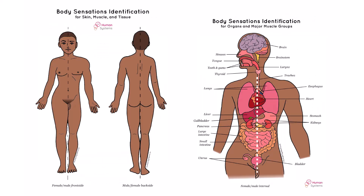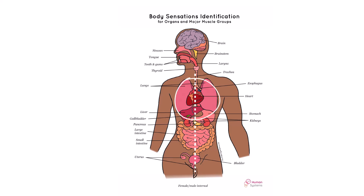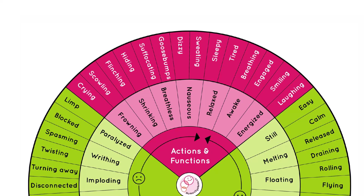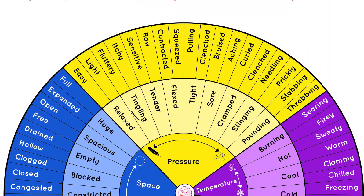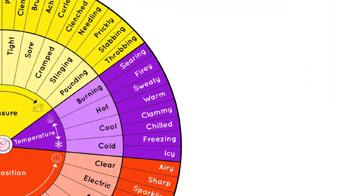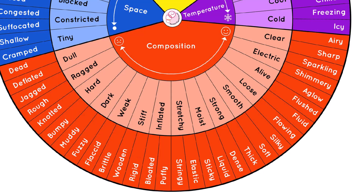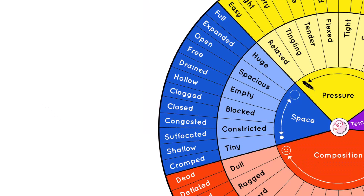Here's a personal example to illustrate. I have a strong sensation inside my chest that on its own is neither pleasant or unpleasant, though some of the words I choose will lean on the pleasant side of the spectrum because my experiences today have been positive. In the actions and functions category, I feel energized. In the movements category, it feels like my chest is buzzing. In the pressure category, it feels tingling. In composition, my chest feels electric.